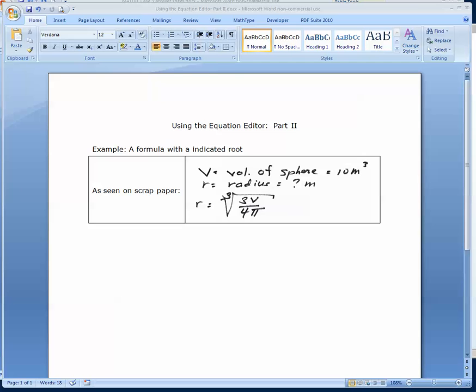After part one, we come to part two. In this lesson, we're going to look at three new things: entering a radical sign with a fraction under it and a Greek letter.